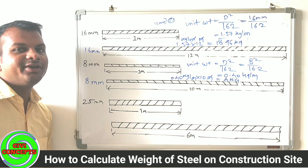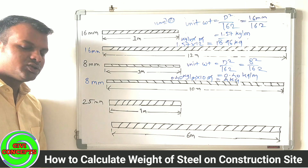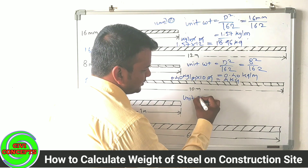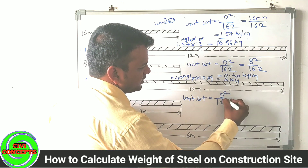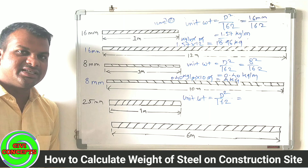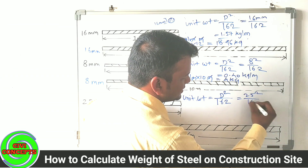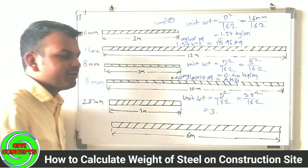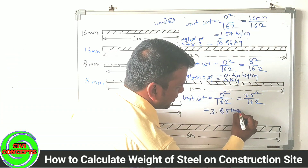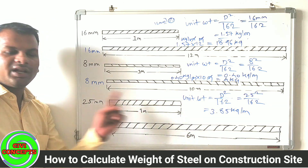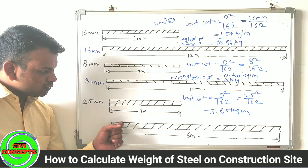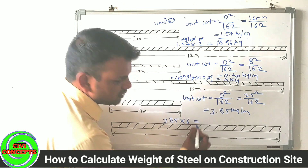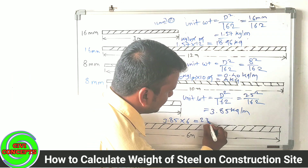In another example: a 25mm diameter bar. The unit weight is equal to D squared divided by 162, where D is 25mm. So 25 squared divided by 162 gives 3.85 kg per meter. For a length of 6 meters: 3.85 multiplied by 6 gives a total weight of 23.1 kg.